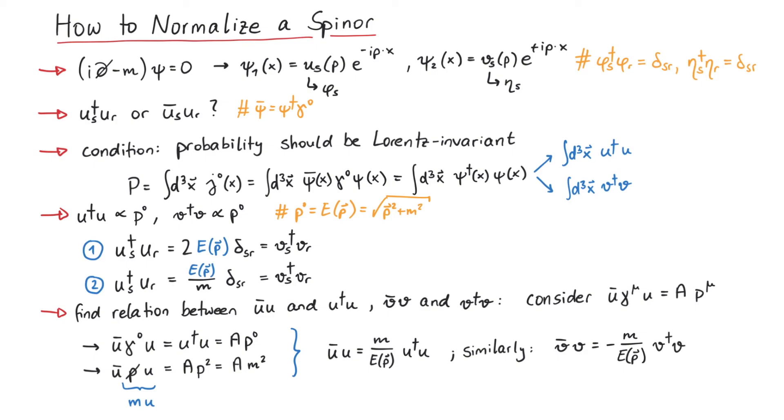using the first convention leads to u dagger u and v dagger v equal to 2 times the energy, u bar u is 2m and v bar v is minus 2m.